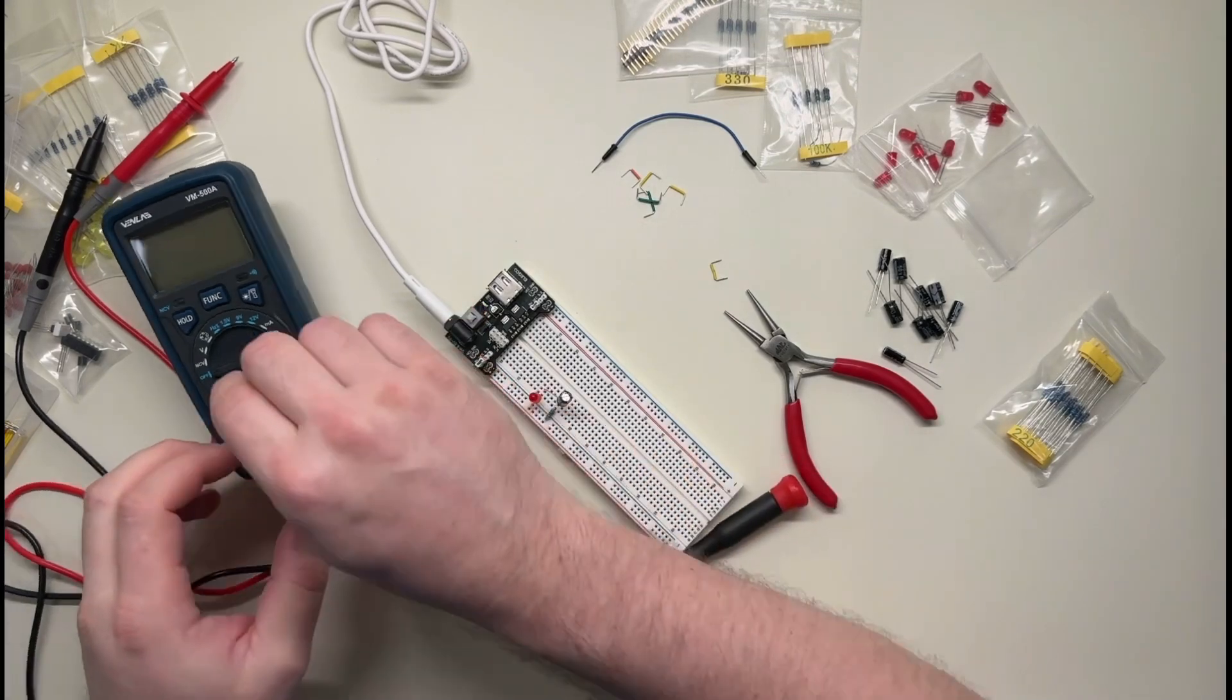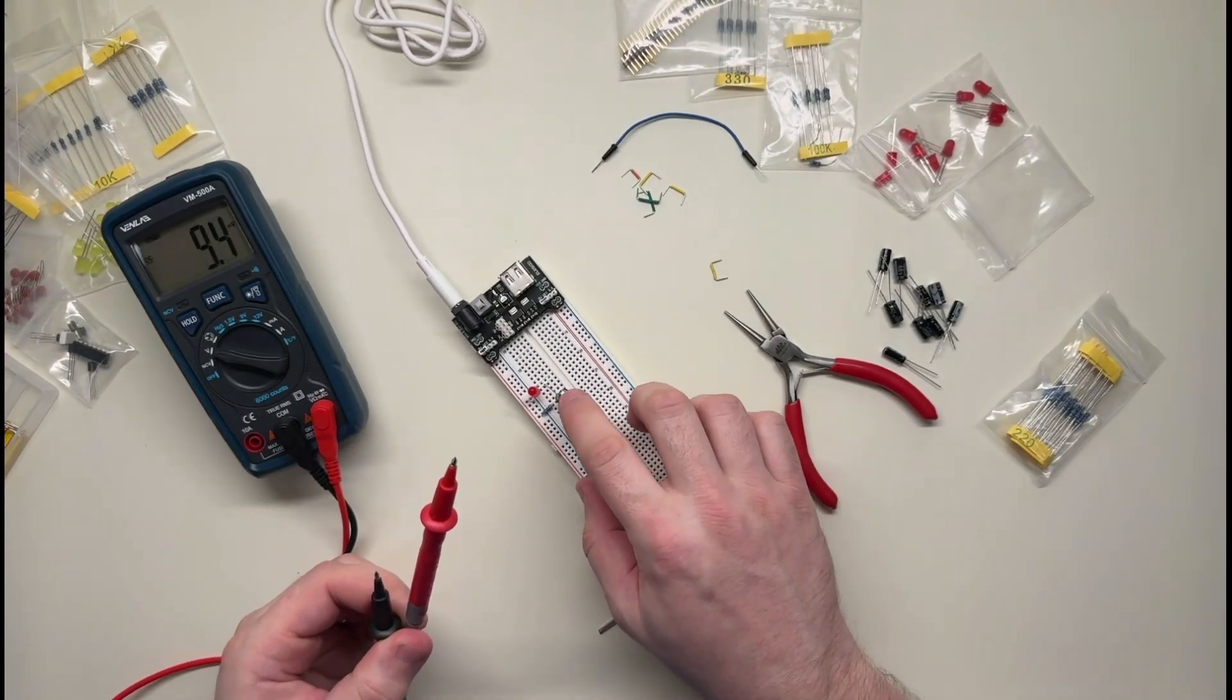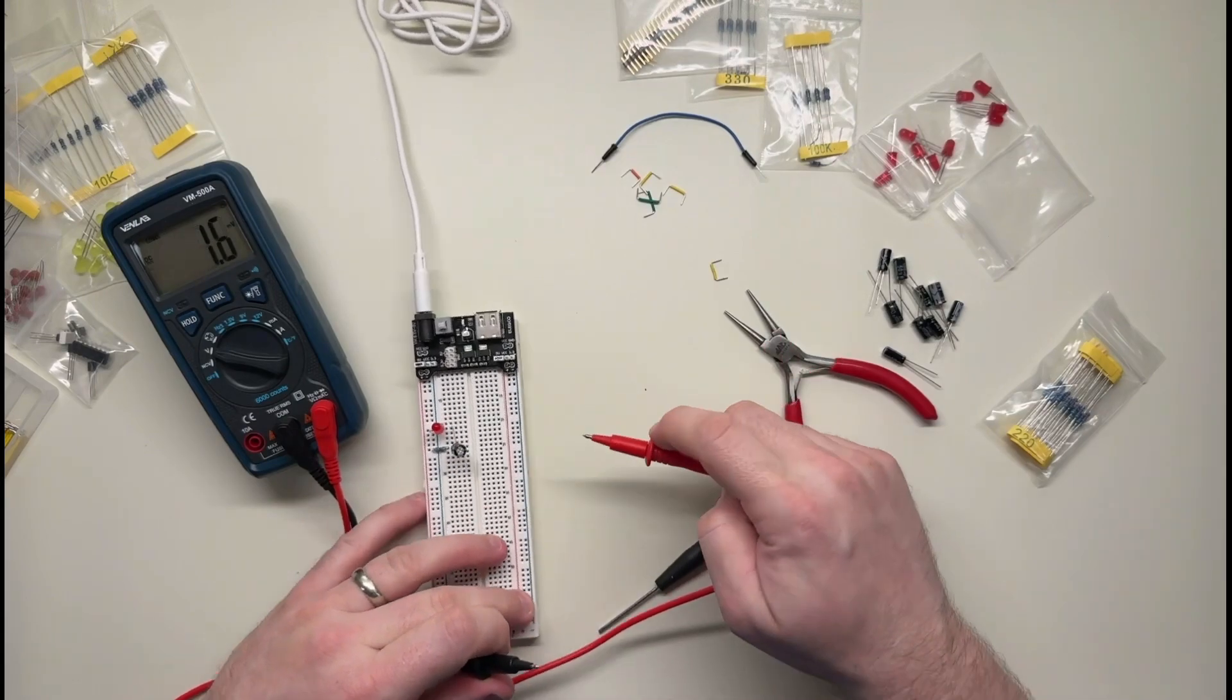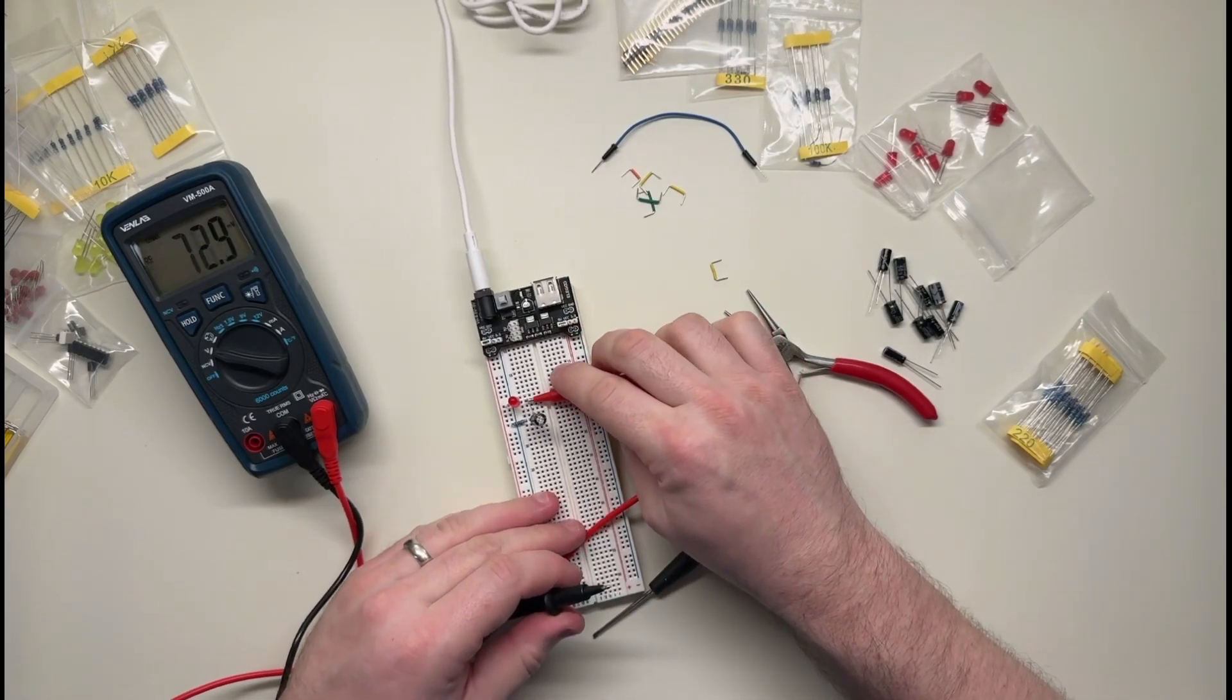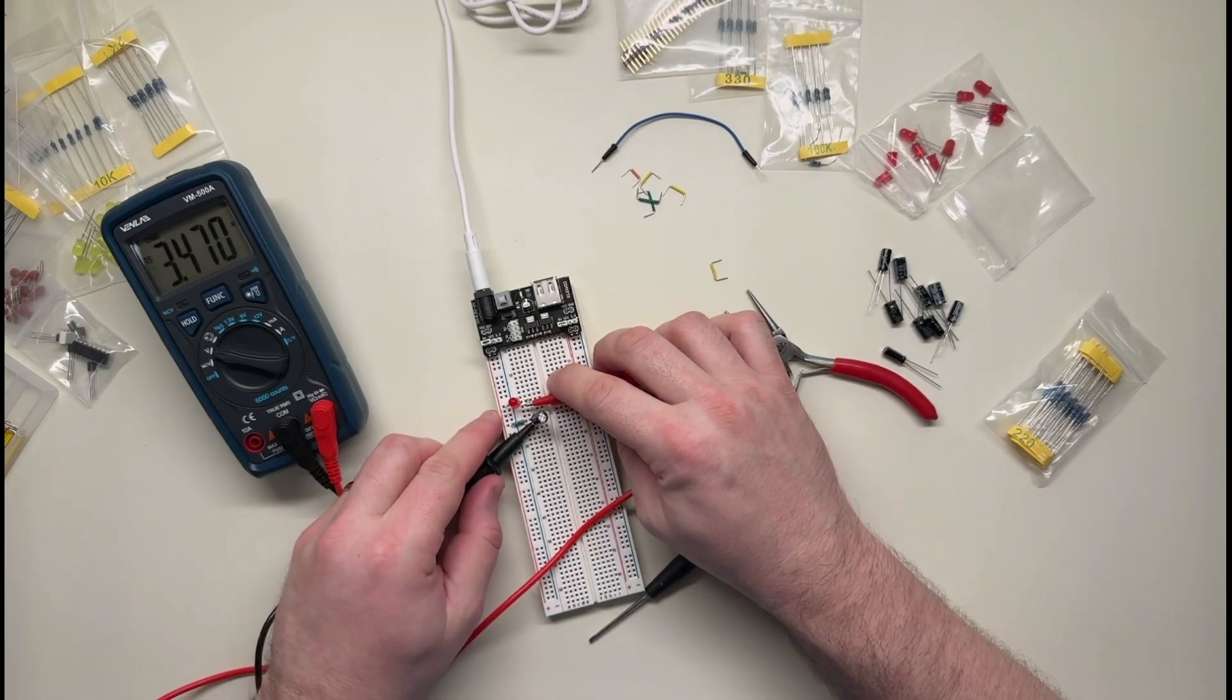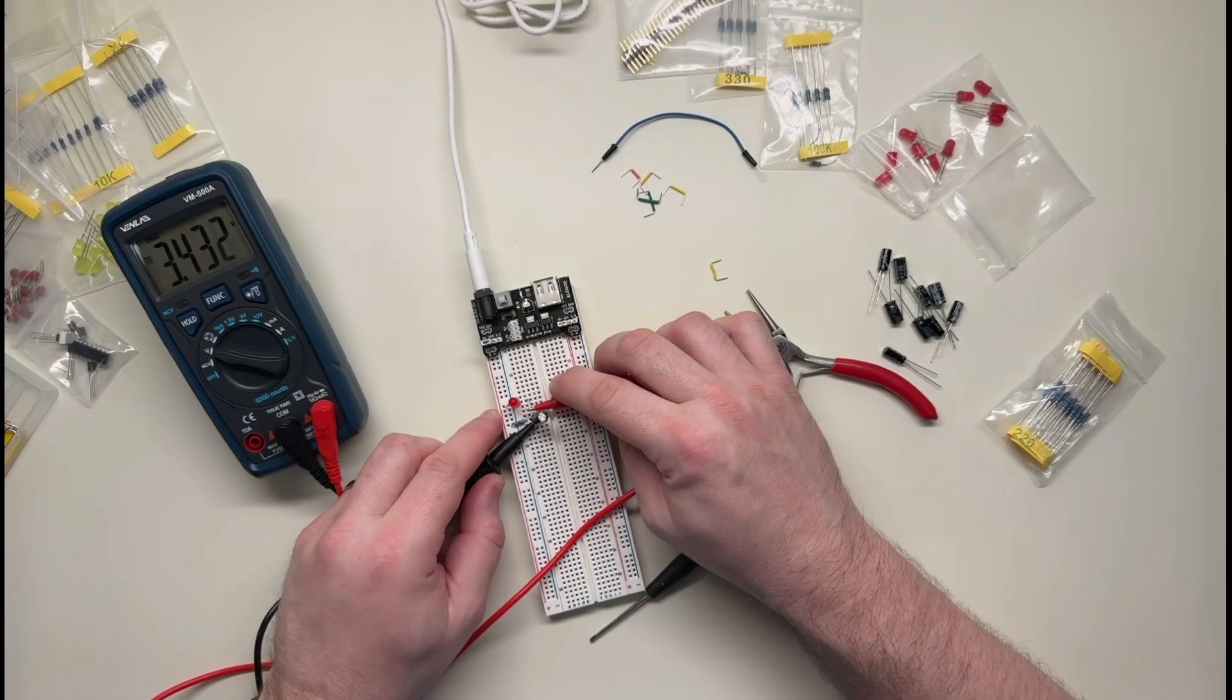But okay, we should be able to see it though, right? We should see a voltage across here, I would think, because it's sort of like a battery. So let's see, the plus side is this side, minus side's this side. Oh yeah, there it is, 3.4, and it's falling.